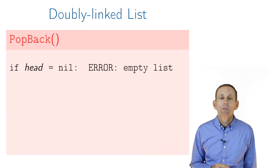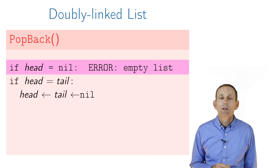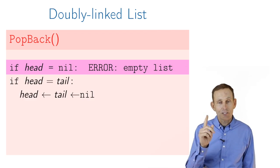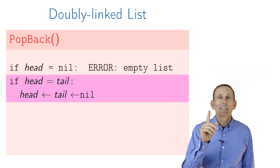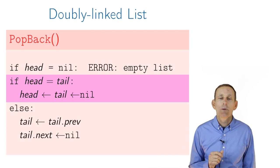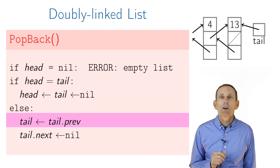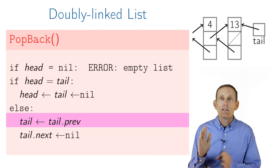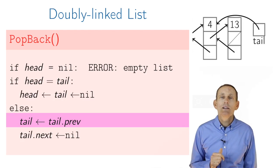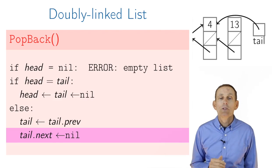Popping the back, also pretty straightforward. We're going to again check to see whether this is first an empty list, in which case it's an error, a list with only one element, in which case it's simple. Otherwise, we're going to go ahead and update our tail to be the prev tail, and then update the next of that node to be nil.